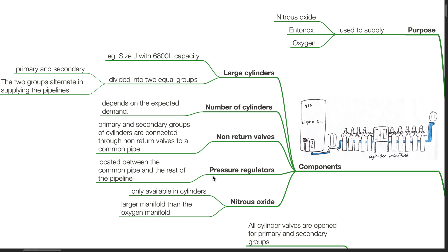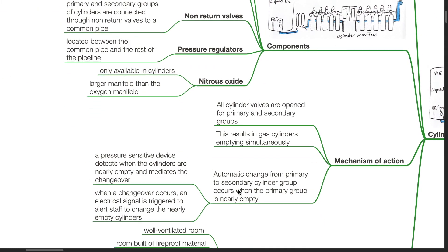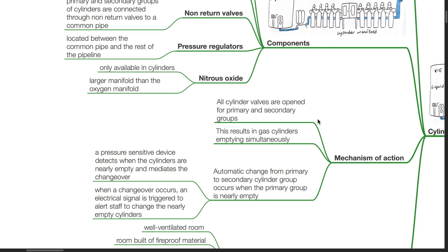Primary and secondary groups of cylinders are connected through non-return valves to a common pipe. Pressure regulators located between the common pipe and the rest of the pipeline. Nitrous oxide is only available in cylinders. It has a larger manifold than the oxygen manifold. Mechanism of action: All cylinder valves are open for primary and secondary groups.